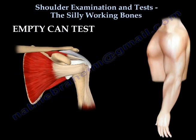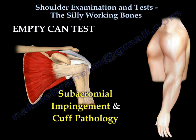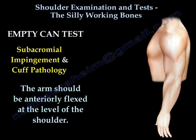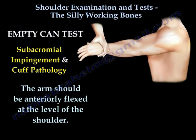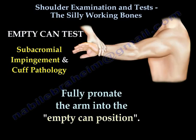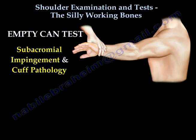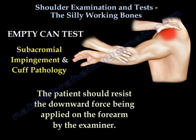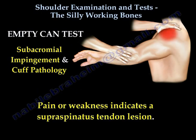Empty can test is a real test for subacromial impingement and cuff pathology. The arm is anteriorly flexed at the level of the shoulder, then fully pronated into the empty can position. The patient should resist the downward force being applied on the forearm by the examiner. Pain or weakness indicate supraspinatus tendon lesion or pathology.